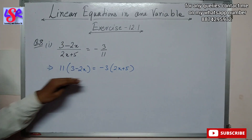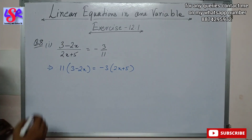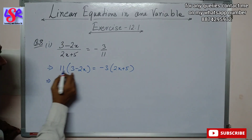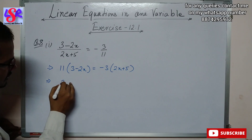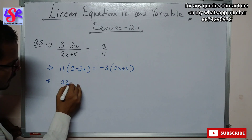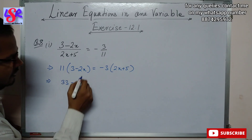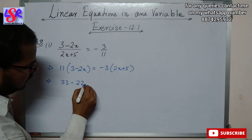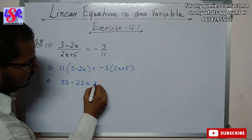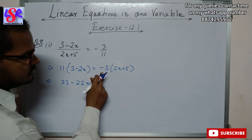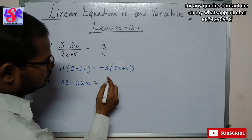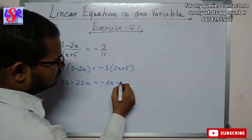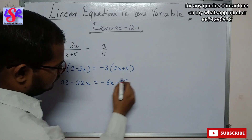Then we are going to open the brackets. On opening the bracket: 11 × 3 = 33, minus 11 × 2x = minus 22x, equals -3 × 2 = -6x, minus 15.